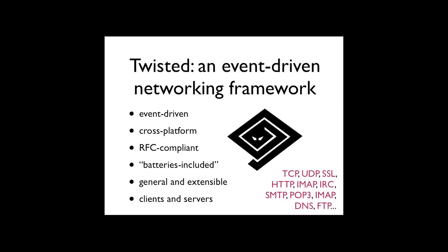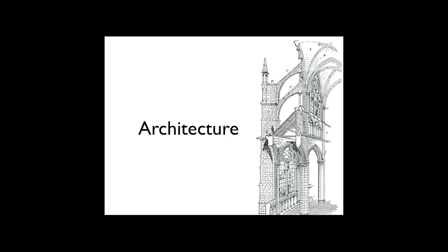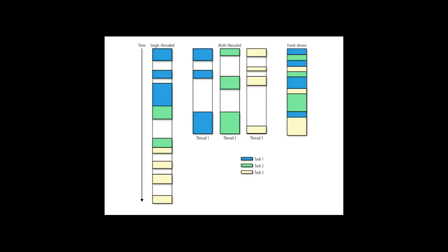Twisted is an event-driven networking framework — a way to write clients and servers. There are a lot of pieces, so we're going to break down the broad strokes architecture of this framework. To motivate this, let's make sure we're all on the same page about the event-driven programming model. An event-driven model contrasts with a couple of other common programming paradigms. The most simple is probably a single-threaded synchronous program. You have a program that executes from top to bottom. If you have some expensive operation like a database query or a network request, you may just have to block and wait for that request to complete. This may not be time-efficient, but it's certainly easy to reason about.